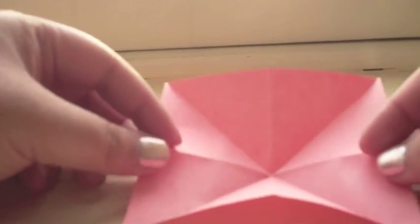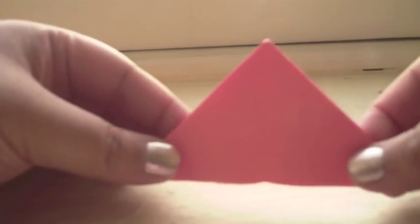Take two of the corners in, or two of the sides in, and then just fold it flat so that it's a triangle.